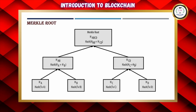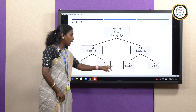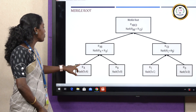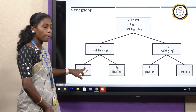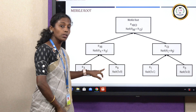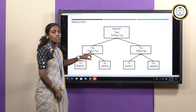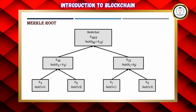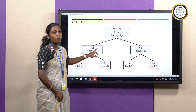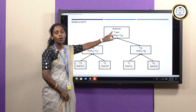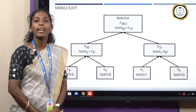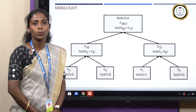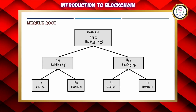Looking at the structure of the Merkle tree: each transaction — for example, transactions A, B, C, and D — is encrypted and its hash value is stored. All these hash values get combined: HA and HB are combined and stored as HAB, and hash values of C and D are combined into HCD. Then HABCD together forms the root node of the Merkle tree, where hash values of all transactions are stored. That is the Merkle root — the root node of the Merkle tree.